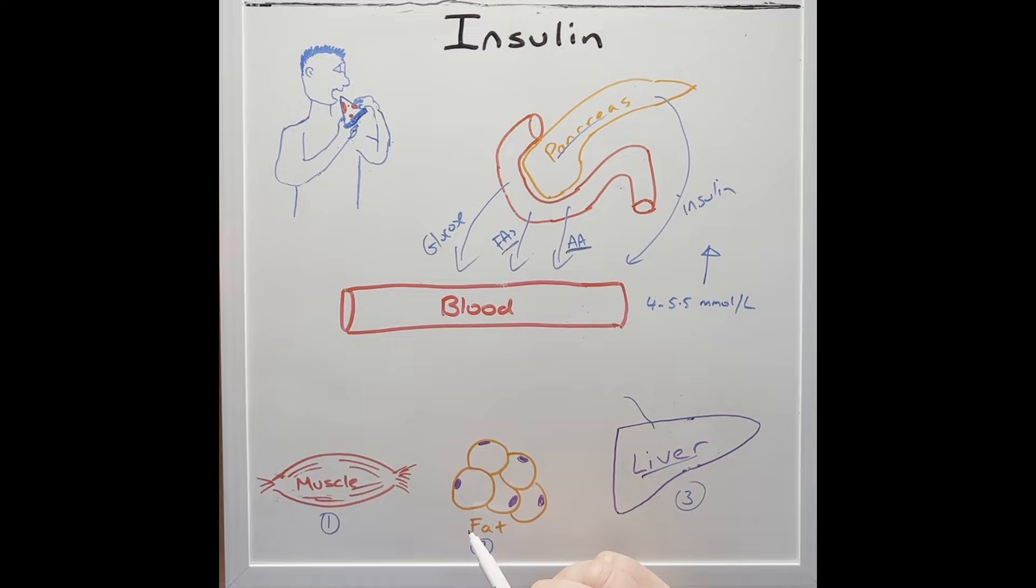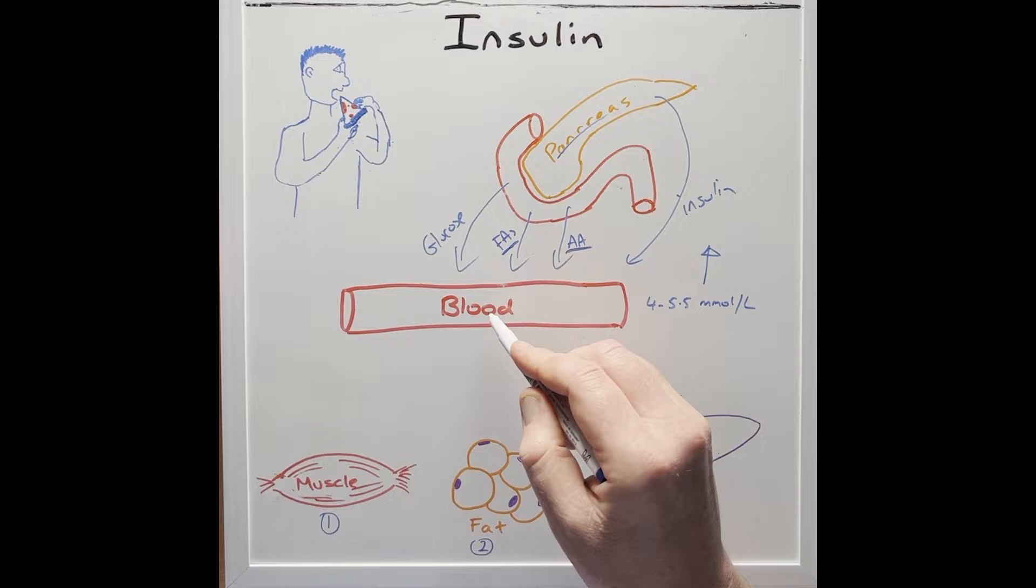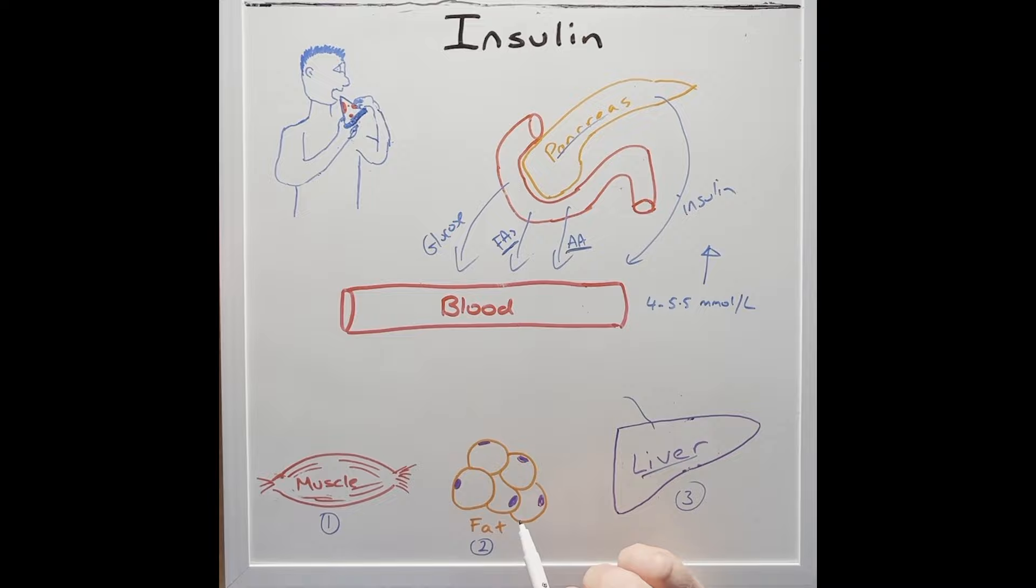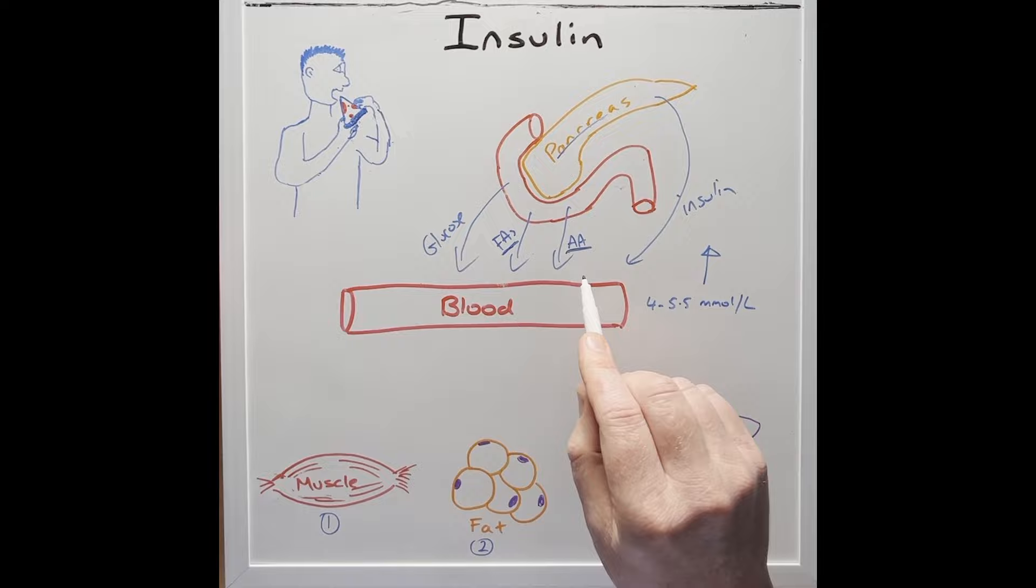Finally, in fat tissue, insulin will allow glucose to enter the fat cells, which then is converted into glycerol. And then lastly, insulin helps to absorb fatty acids, which came from the pizza, and also the liver, to be combined with glycerol and stored as triglycerides.